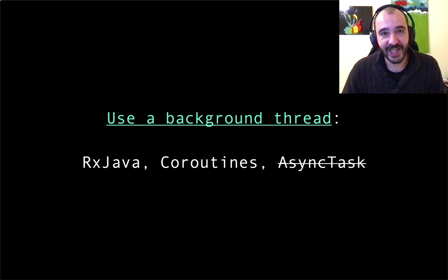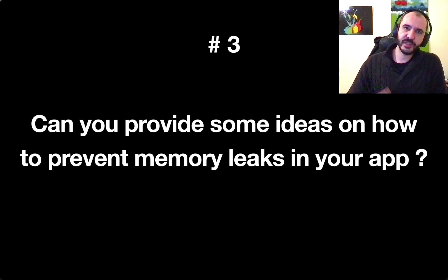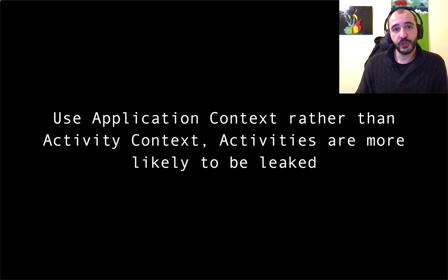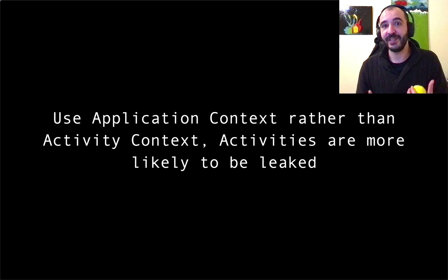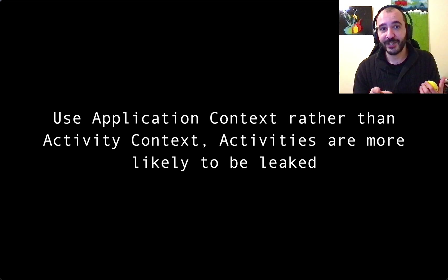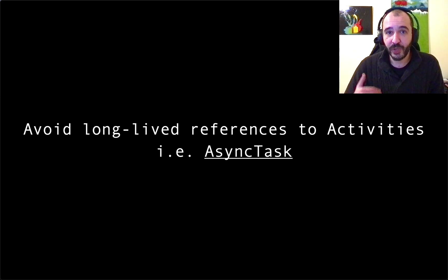Do not say that you use AsyncTask — AsyncTask is bad, but don't be vocal when you want to bash it, because they're going to ask you why it's bad. Number three: can you provide some ideas on how you would mitigate memory leaks in your app? First, you shouldn't use Activity context — you should always use Application context, because activities are likely to leak. If the context relates to an activity that is now dead and you attempt to use it, you're going to crash. Avoid long-lived references to activities — this is what AsyncTask does.